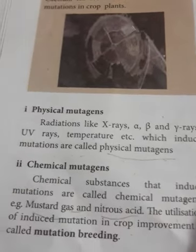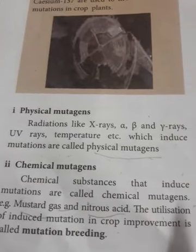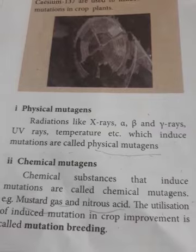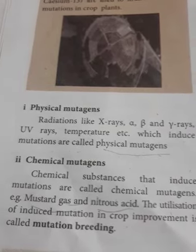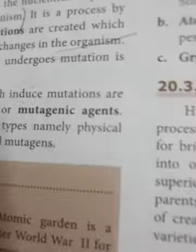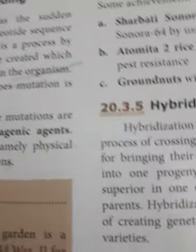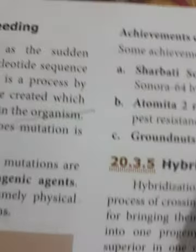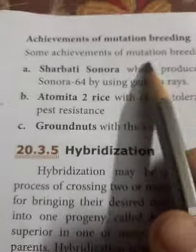The utilization of induced mutation in crop improvement is called mutation breeding. Similarly, like polyploid breeding which has certain achievements, mutation breeding also has certain achievements.